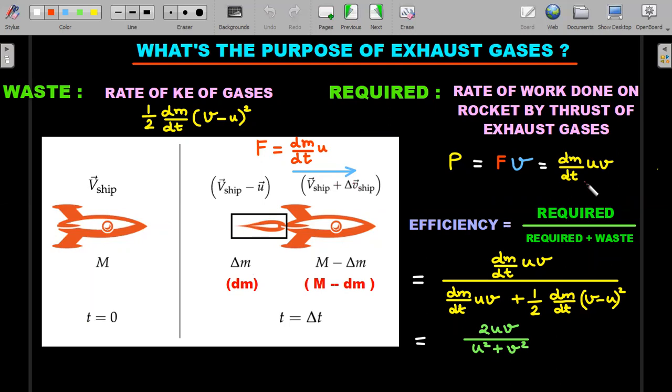Now, what is the waste? According to the question, he says the rate at which the KE of the gases is developed. The burnt gases, how much KE you are developing, is going to waste. That rate is ½ dm/dt, and not u². Please understand, you're trying to calculate the value in terms of the ground observer or rest observer, so that's why this (v - u)². Now you got the requirement, you got the waste. Therefore efficiency is required by total input, which is requirement plus the waste you are unnecessarily getting.